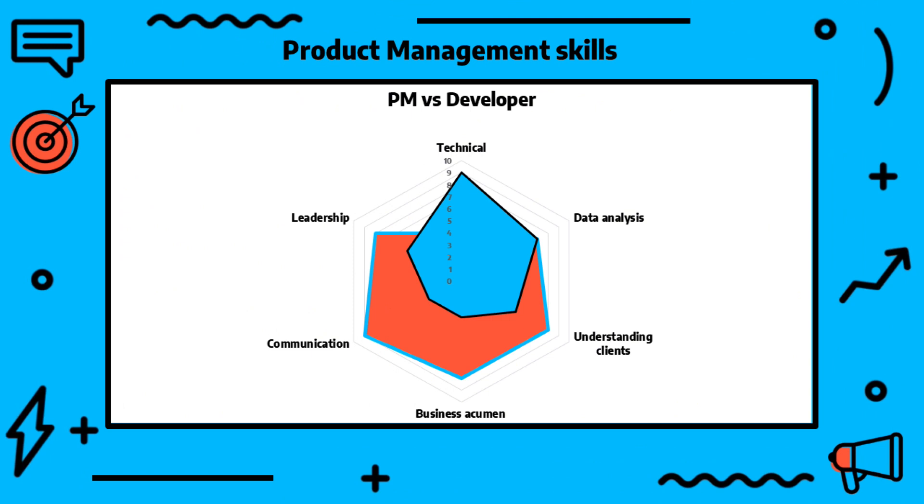Let's start by looking at the spider chart of skills that compares product manager skills with those of a co-developer. In my humble opinion — I talk about this chart and the skills in another video linked in the description — you can see that unlike a typical product manager, you are much more technical. You're probably on par in terms of data analysis, but you lack in other areas, simply because product management wasn't your focus until today.